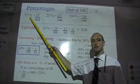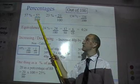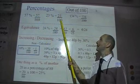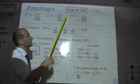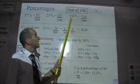Okay, so basically, percentages are out of 100, so 57% would be 57 out of 100. 23% would be 23 out of 100. 134% would be 134 out of 100.